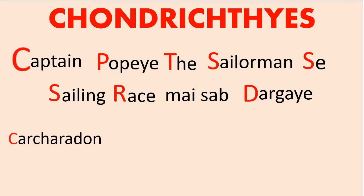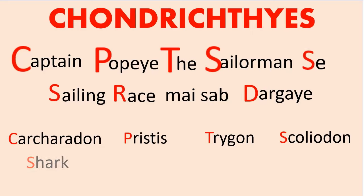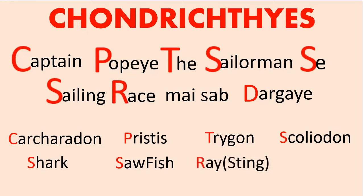Captain's C is for Sphyrna (shark). Popeye's P is for Pristis. The's T is for Trigon. Sailor man's S is for Scoliodon. Now remember their common names: C is for Shark (common name of Sphyrna). P is for Sawfish (common name of Pristis). Race's R is for Stingray (common name of Trigon). And Dar gaya's D is for Dogfish (common name of Scoliodon).